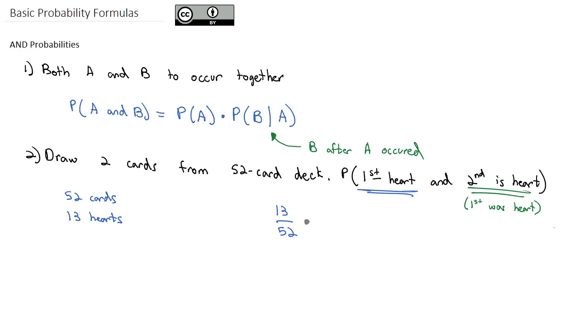What does that mean? That means I've pulled one of the hearts out of the deck. I've also pulled one card out of the deck. So now there are 12 hearts left in the deck, and there are 51 cards left in the deck.